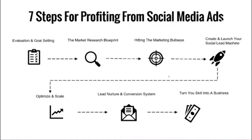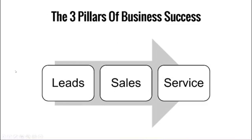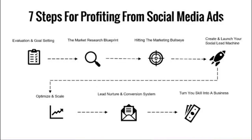In the previous parts, we sent out cold emails, showed the responses, played a sales call converting a client into a $3,000 a month client. Now I'm going to show you how to deliver the service. There are three pillars to every business: leads, sales, and service. If you're not making the money you want, focus on getting appointments, closing appointments, and building systems to deliver the service. This process for running social media ads — Facebook ads, Instagram ads — is seven steps.